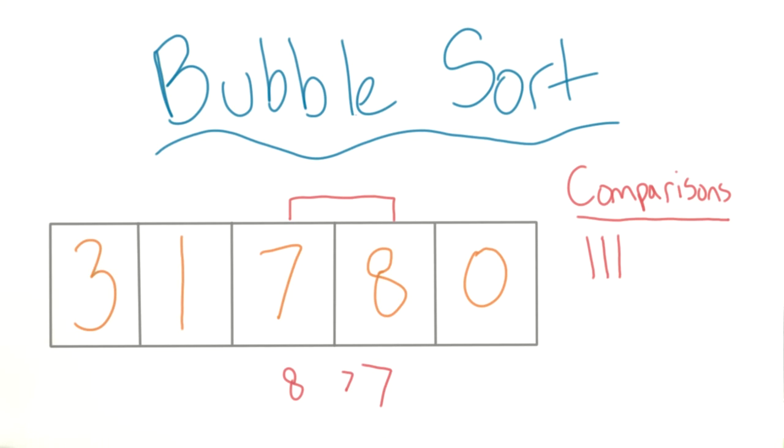Now we can compare the last two elements in the array. And once again, the first element is bigger than the second one, so we'll need to switch. Now we're done with this round.